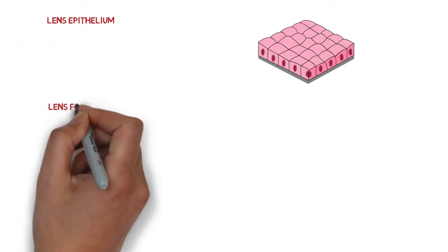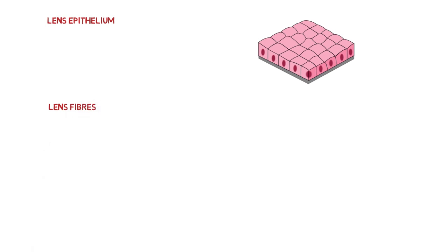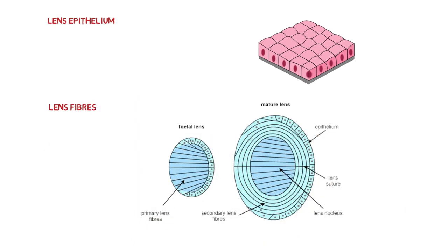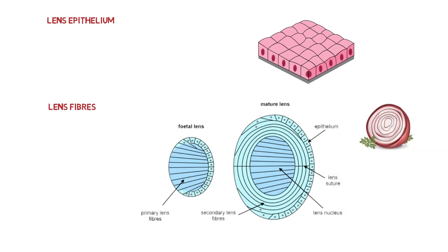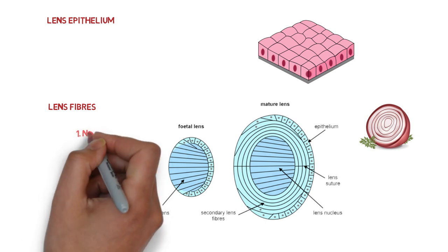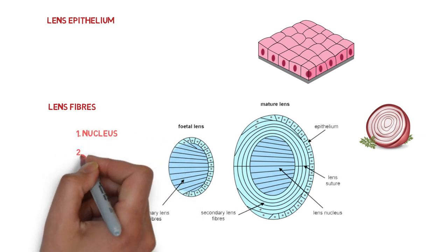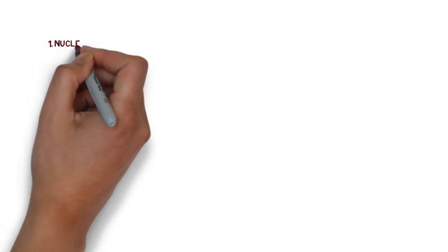The third one is lens fibers. Lens fibers make up most of the lens volume and are laid horizontally and concentrically like layers of an onion. Look at this—yes, it looks like onion peels. So these lens fibers are arranged compactly as nucleus and cortex.